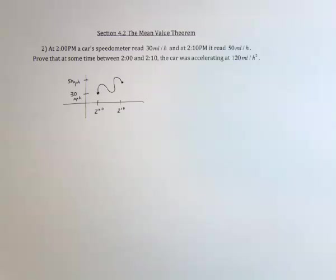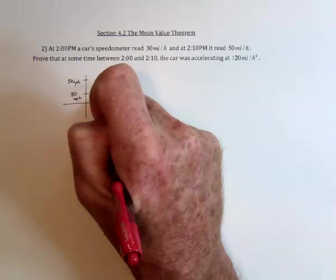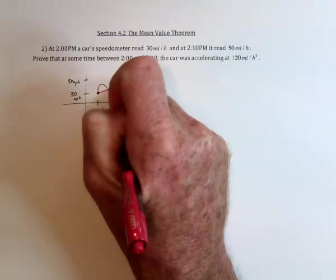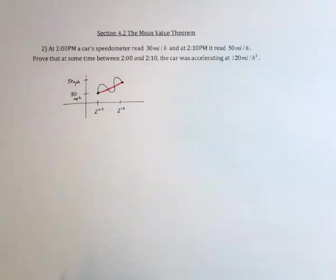Then this is a perfect setup for the mean value theorem. It says if you have two points and you've got a continuous function, then you can take those two points and find the slope of the line that goes between those two points.